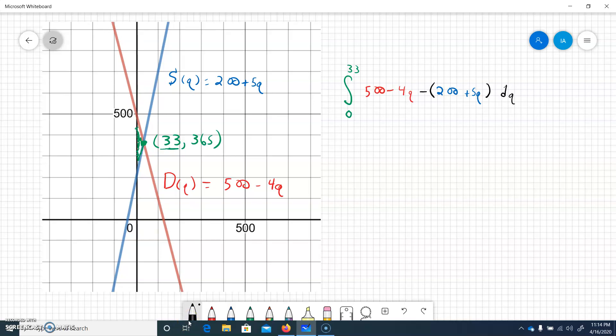So as I said, we've got basically four things here. It'd be nice to distribute that negative. So we could integrate the four things separately and then plug in the 33 and the zero. But what I like to do here, even though it's probably not saving any work in an example this small, is go ahead and combine things. So 500 minus 200 would be 300. And then negative 4Q minus 5Q would be negative 9Q.